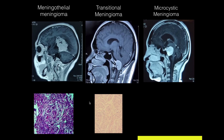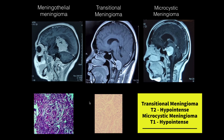Shown here are a few cases of meningioma encountered in practice. A tentorial meningioma turned out to be the meningothelial type — the most common type — characterized by its syncytial appearance. A foramen magnum meningioma was the transitional type, showing avid enhancement along with adjacent dural enhancement — the characteristic dural tail sign.